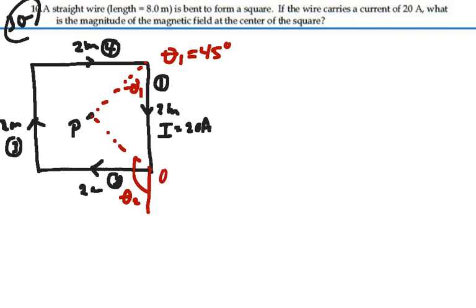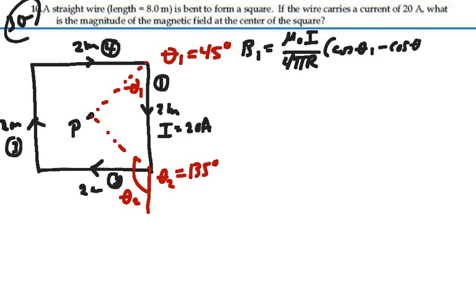So then theta two would be equal to 90 plus 45 or 135 degrees. So if we were to calculate the magnetic field due to number one, that would be mu naught i over 4 pi r cosine theta one minus cosine theta two.